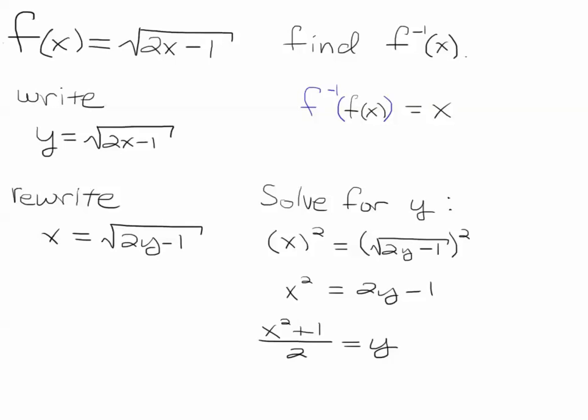And then we add 1 to both sides, and after we add 1 to both sides we then divide by 2, and we end up with x squared plus 1 all divided by 2.